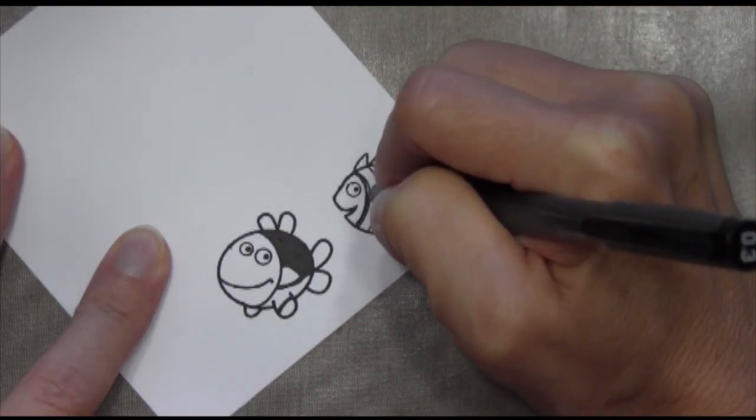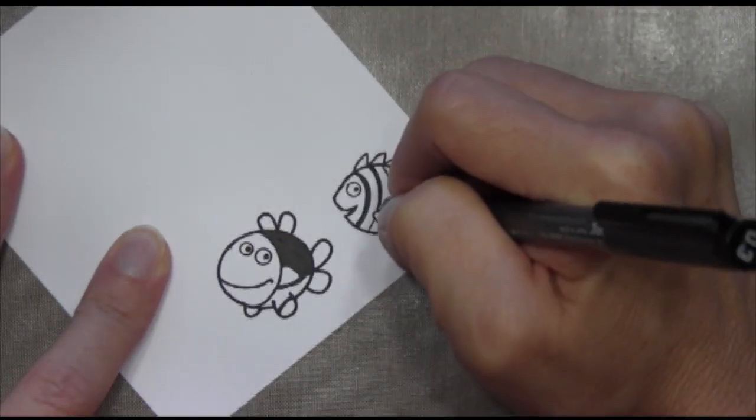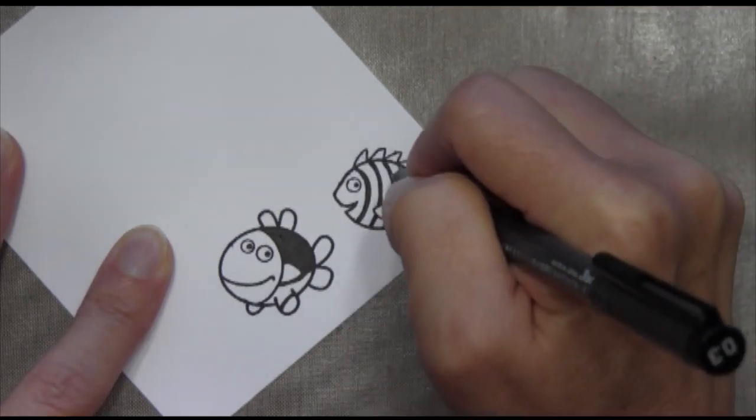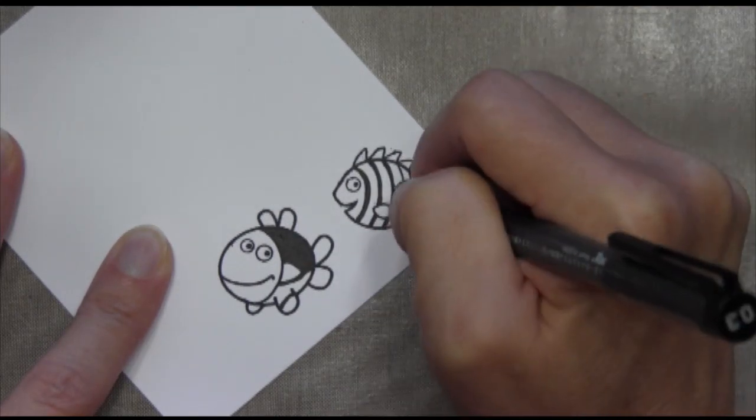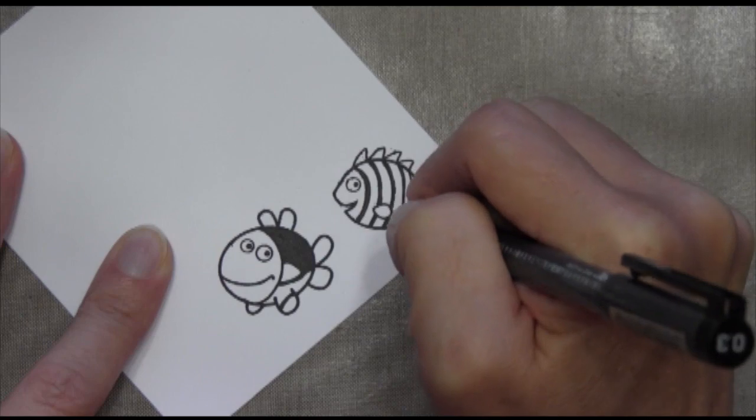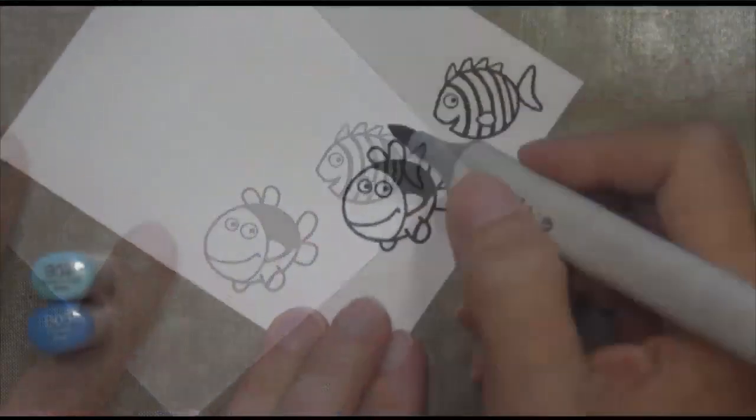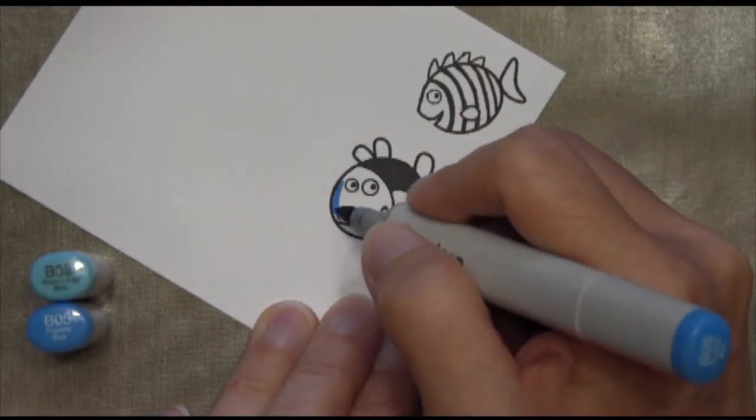So I went and downloaded a picture of Dory from the internet. And so I'm just creating the same markings that she has. And this is going to be Marlin. And he has kind of thicker black lines. So I'm going over that with my Copic multiliner.